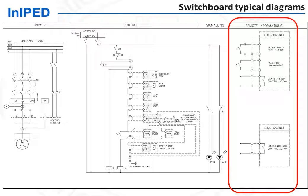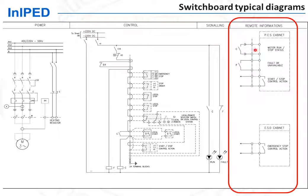Controls must also be defined — for instance, for a motor, control signals from the process control system to start or stop the motor, as well as signals from the process safety system to shut down the motor in an emergency. These signals exchanged between the process control system and emergency shutdown system with the MCC are shown on switchboard typical diagrams.